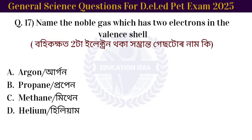Next question: name the noble gas which has two electrons in the valence shell. The answer is helium.